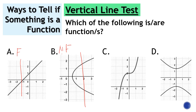For letter C, if we draw a vertical line, there will only be one point of intersection, therefore it's a function. For letter D, it's not a function because there will be two points of intersection.